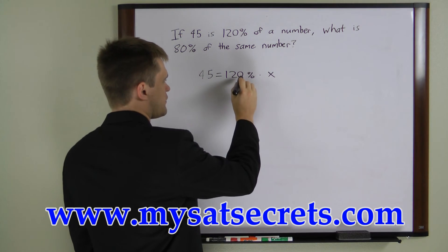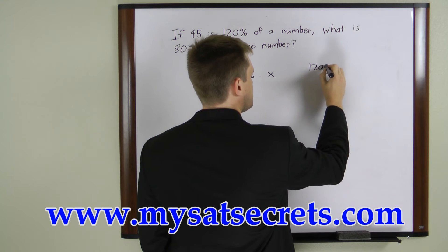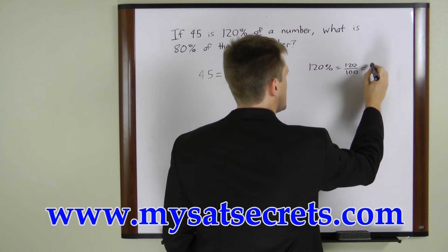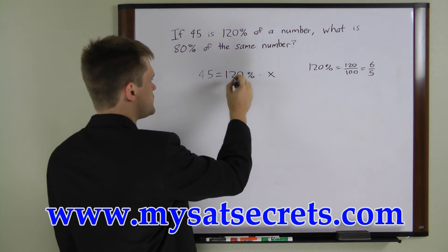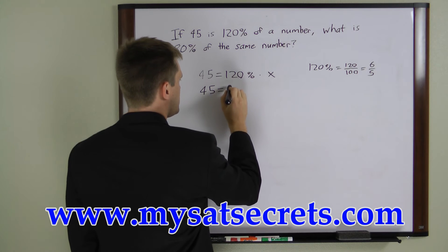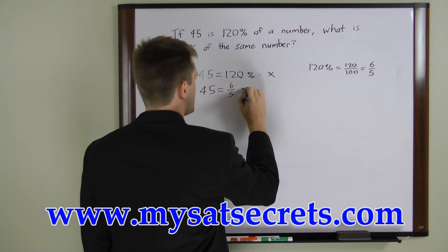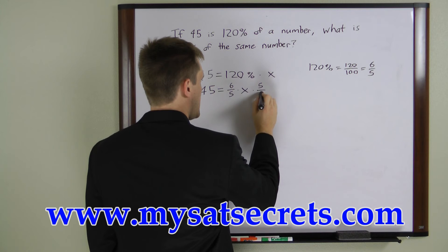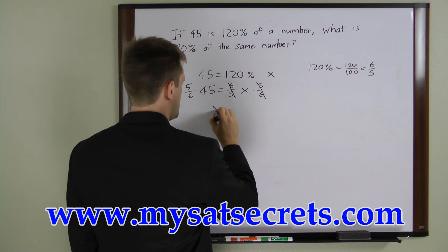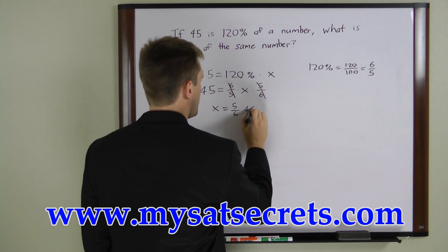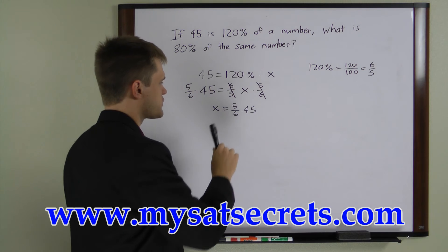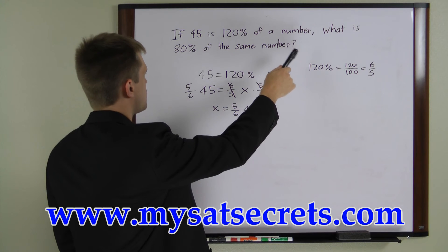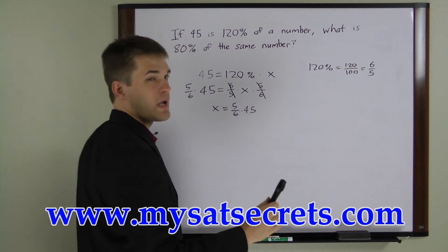To solve this, convert 120% to a fraction: 120 over 100 equals 6 over 5. Substituting gives us: 45 equals 6 over 5 times x. Multiplying both sides by 5 over 6 cancels the fraction, giving us: x equals 5 over 6 times 45. We'll leave x in this form to plug into the next equation.